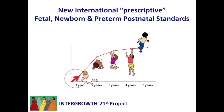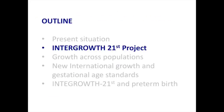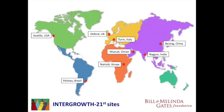So how did we do it? Based on that WHO child growth study, they selected eight sites around the world. The geographic spread is pretty broad, and the ethnic mix covers most major continental groups.